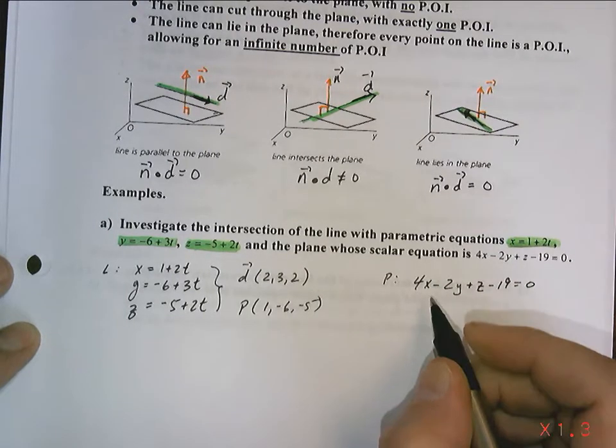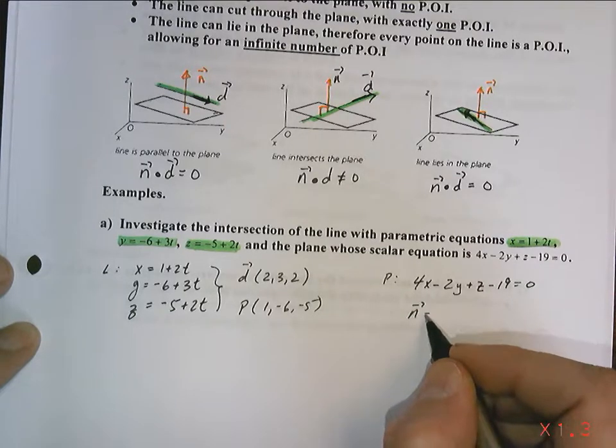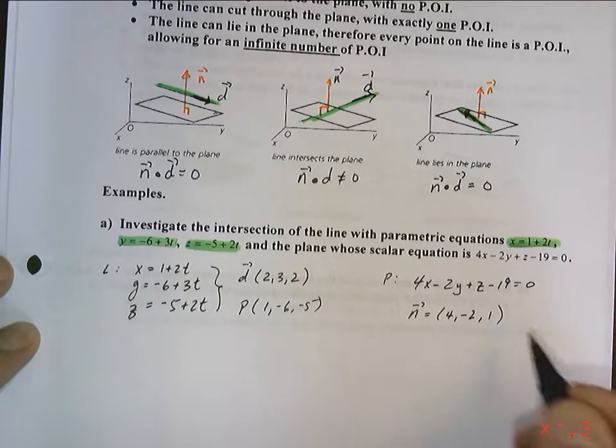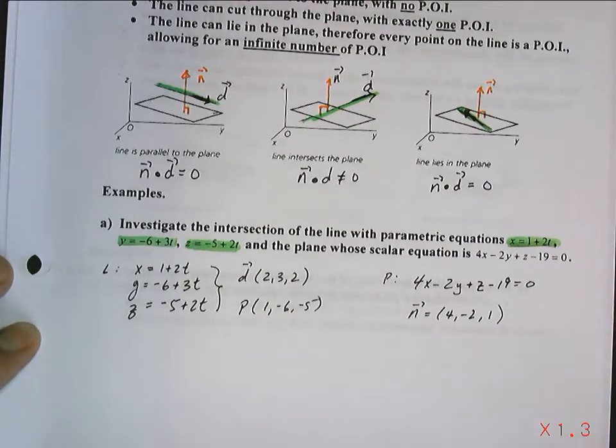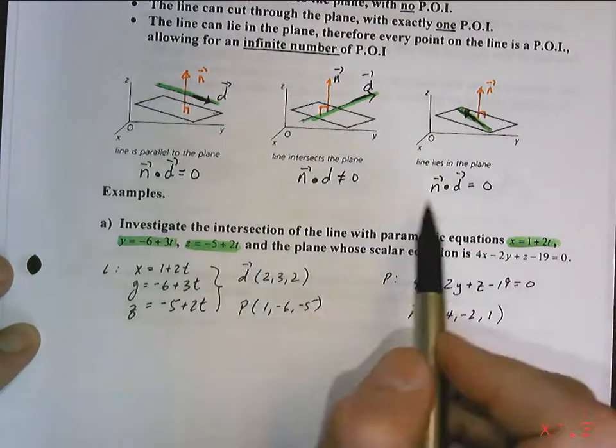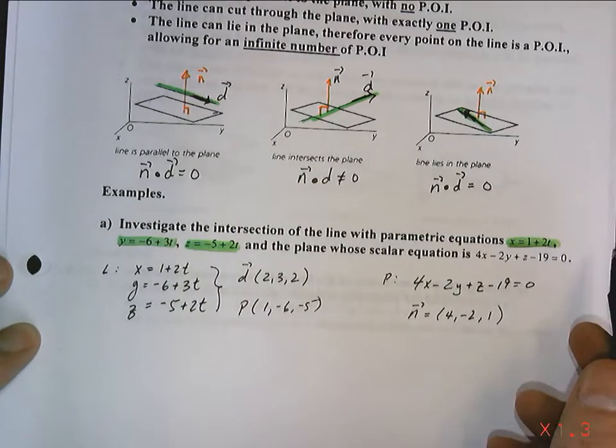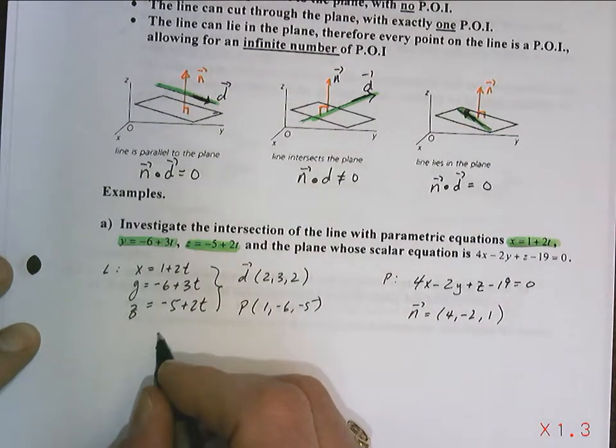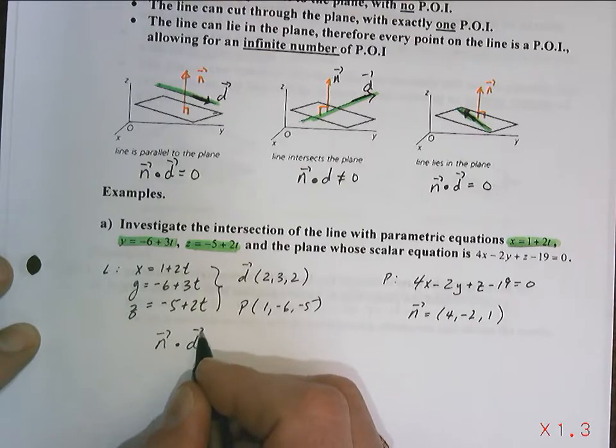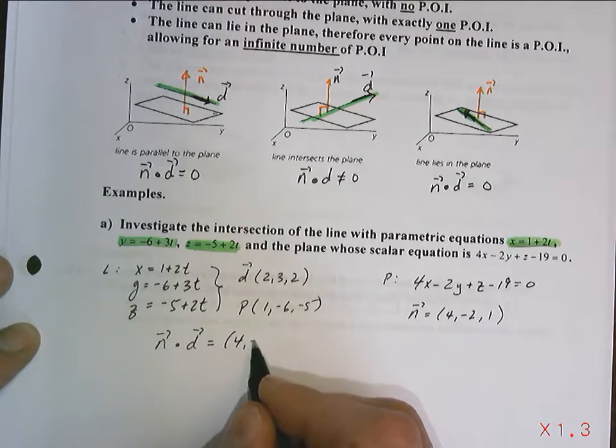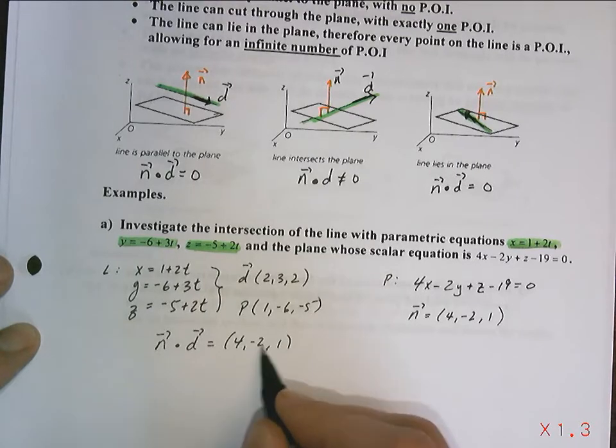Which means that we can figure out its normal pretty easy. So the first thing I'm going to do is I'm going to figure out which one of these cases I might be dealing with by investigating the normals and the direction vector. So I'm going to take the normal and I'm going to dot it with the direction vector of the line. And that's going to be 4, negative 2, 1, the normal of the plane, dot,